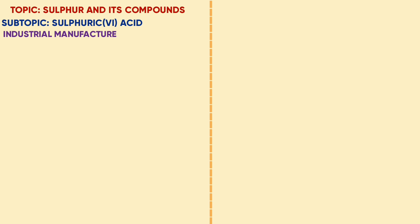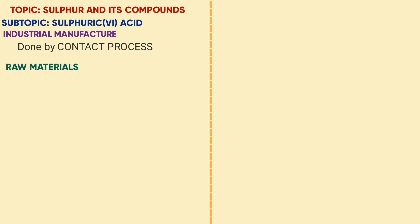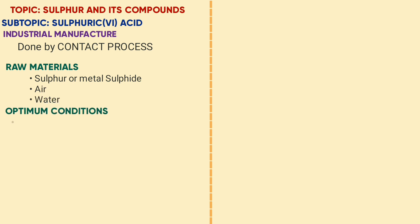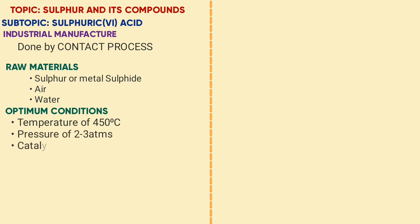We begin by looking at the industrial manufacture of sulfuric acid, which is prepared by a process called the Contact Process. The raw materials are sulfur or a metal sulfide, e.g. zinc sulfide, air, and water. Optimum conditions are a temperature of 450 degrees Celsius, pressure of 2–3 atmospheres, and a catalyst of either vanadium pentoxide (V₂O₅) or platinum.